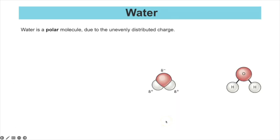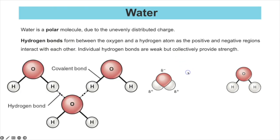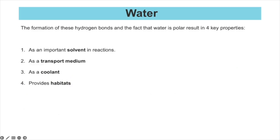Water is a polar molecule due to the uneven distribution of charge — delta negative on the oxygen and delta positive on the hydrogen atoms. Because of this uneven distribution, hydrogen bonds can form between the oxygen of one water molecule and the hydrogen of another. A hydrogen bond is relatively weak individually but collectively provides considerable strength. It is this structure and those hydrogen bonds that give water all its biological properties.